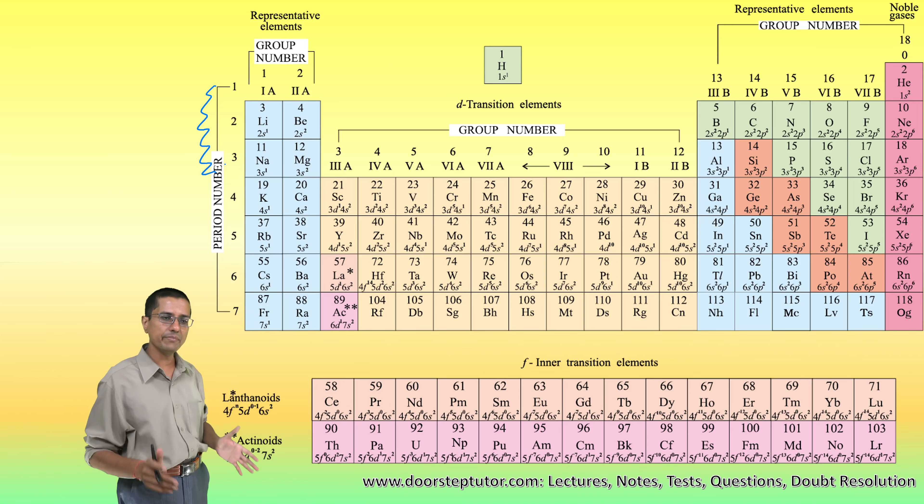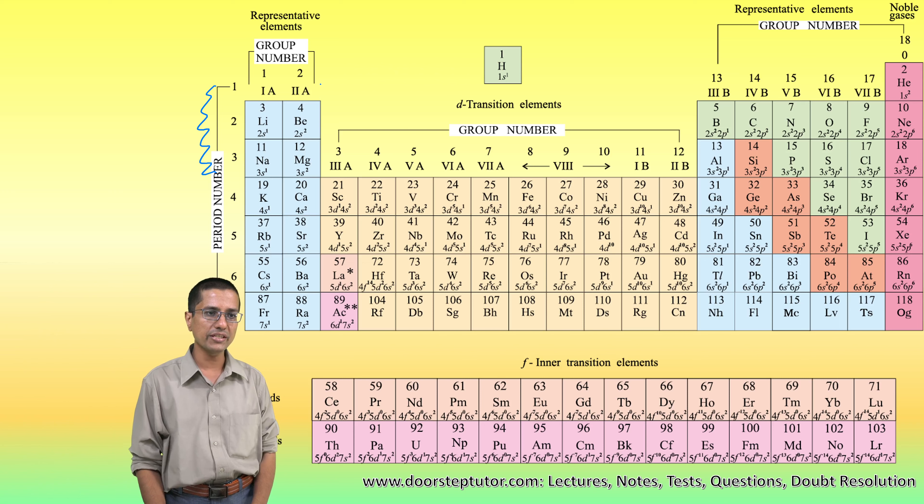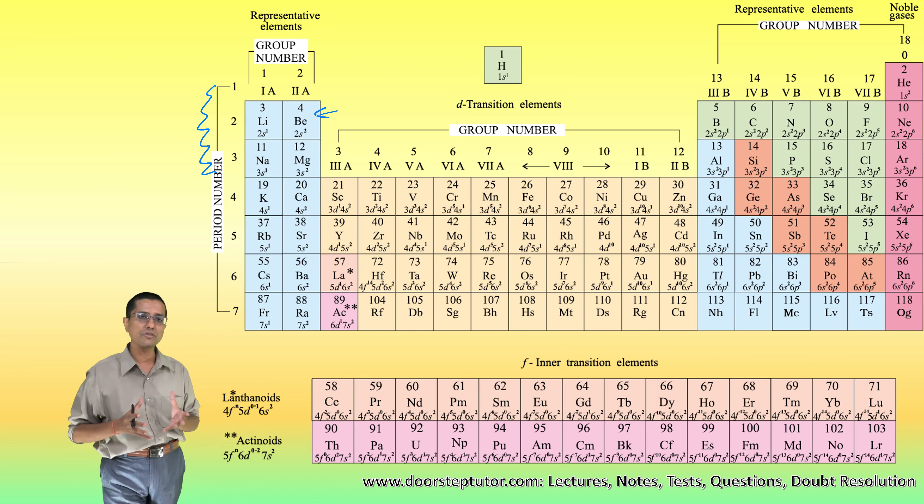And the reason being that for these first three periods, as I told you, here the s and p electrons are the ones which participate in the bonding. They are predominantly responsible for the bonding.